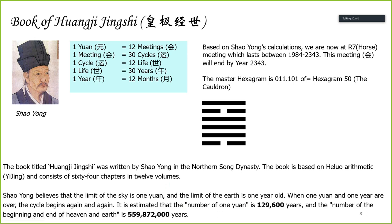From the feng shui and metaphysics perspective of multi-generational and global outlook, there are a few books we normally refer to. One particular book covers a very long count — a calendar for what may be deemed close to the galactic year. In this galactic year, the period between 1984 and the year 2343 is represented by a particular hexagram called the Cauldron.